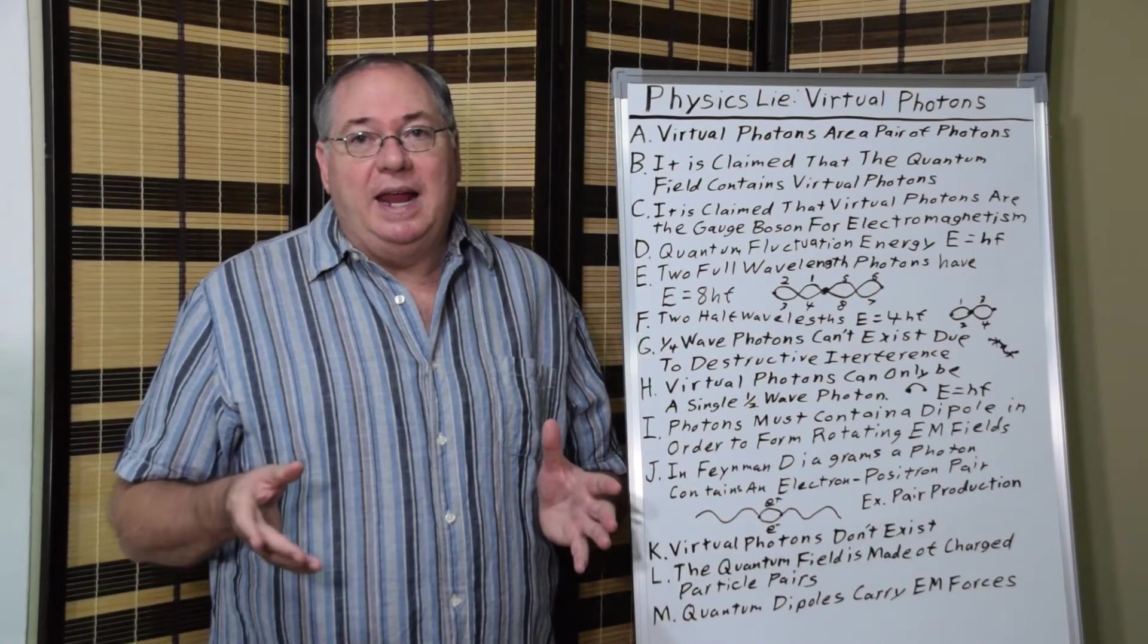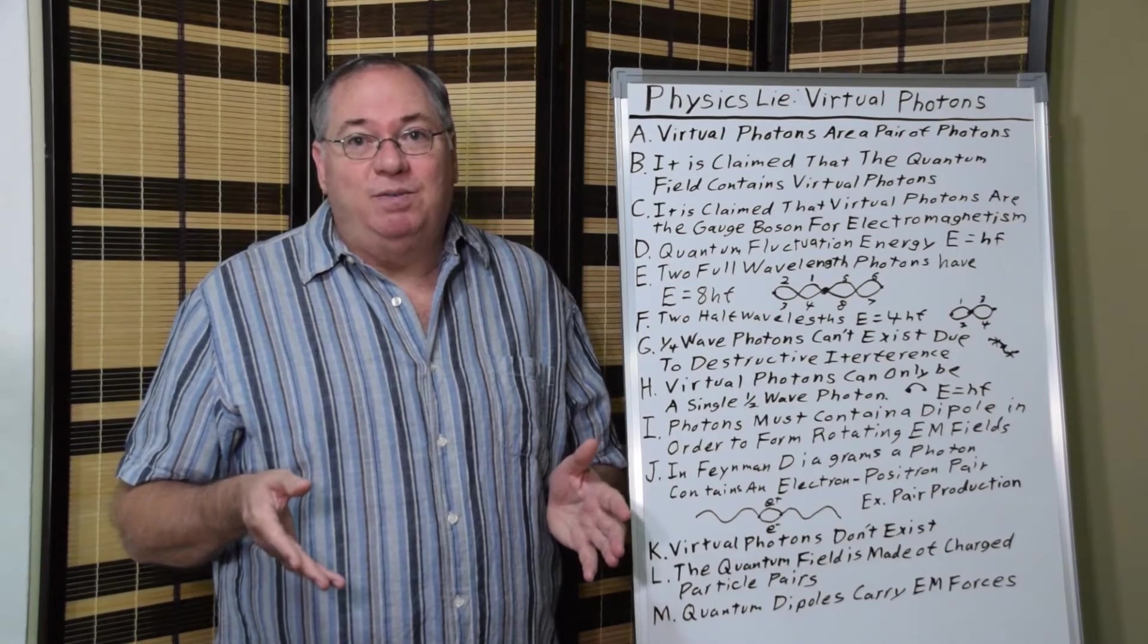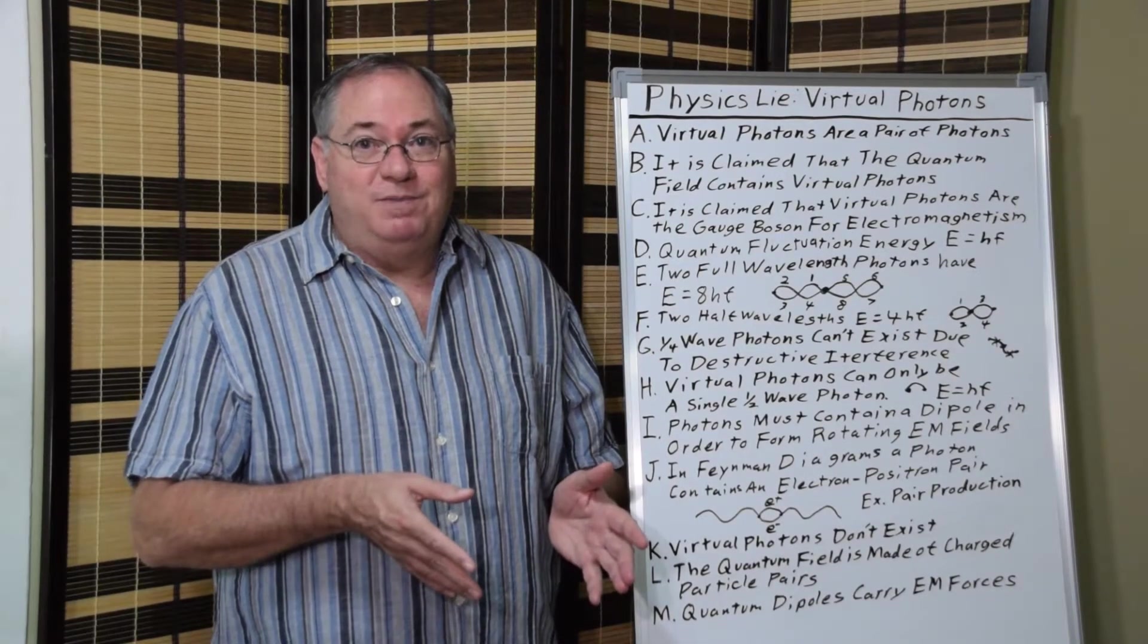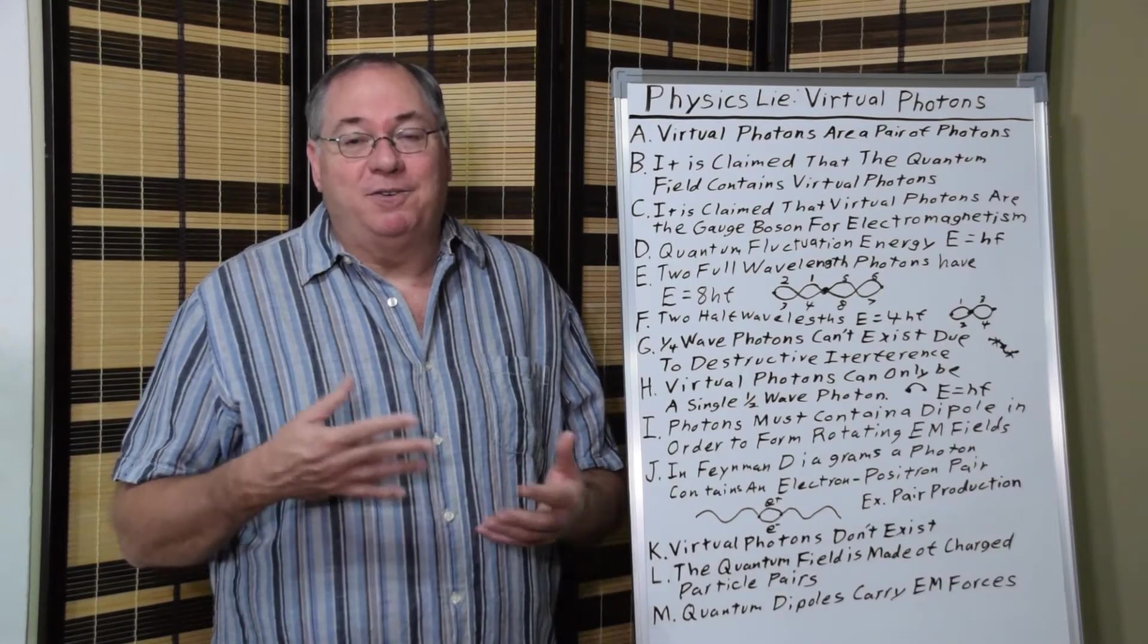So in essence, the space actually is filled with virtual photons, but the virtual photons are really quantum fluctuation particle pairs, like electron-positron pairs.